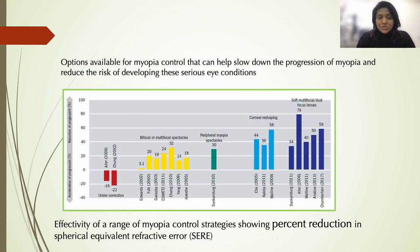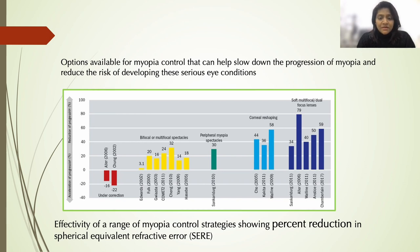There are various options available for myopia control. The graph shows the various methods used in different studies to control myopia progression — including spectacle options such as bifocals, multifocals, peripheral defocus spectacles, contact lenses for corneal reshaping, and soft contact lenses. The numbers above each bar show the percentage reduction in spherical refractive error. Under-correction, shown in red, is a disaster as it actually leads to increased myopia.